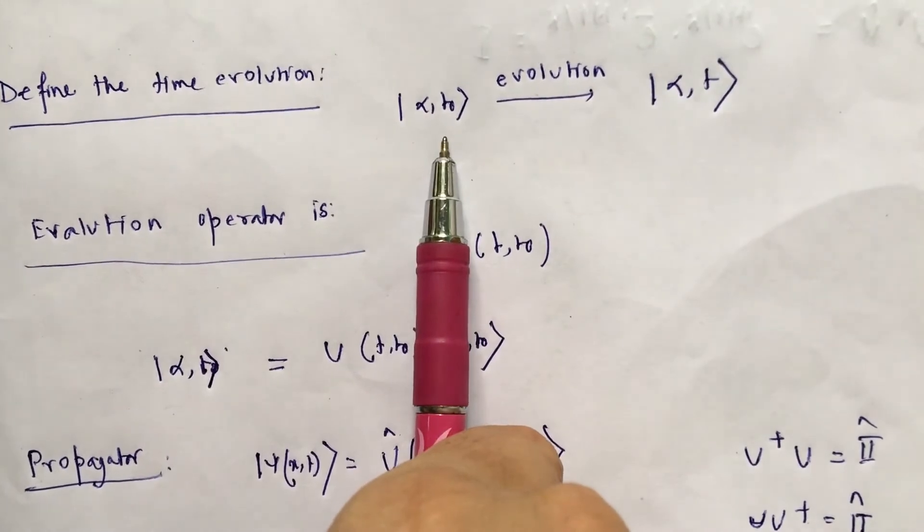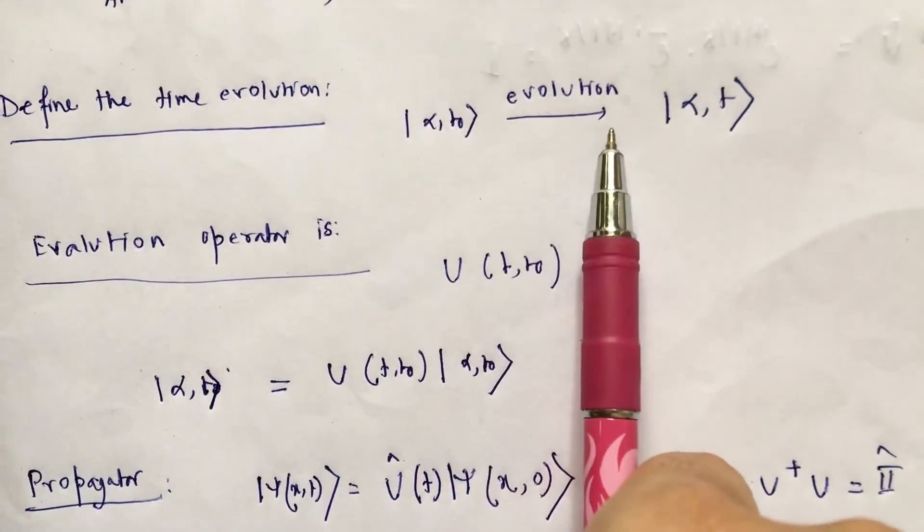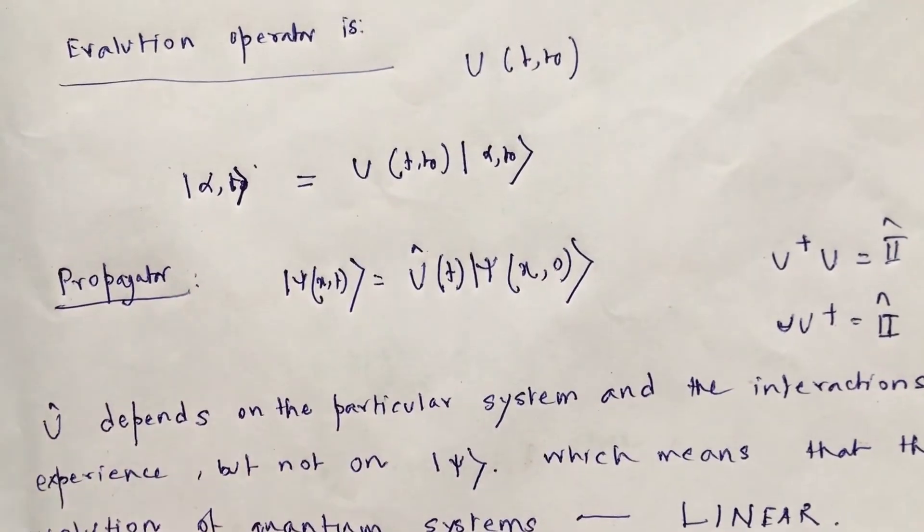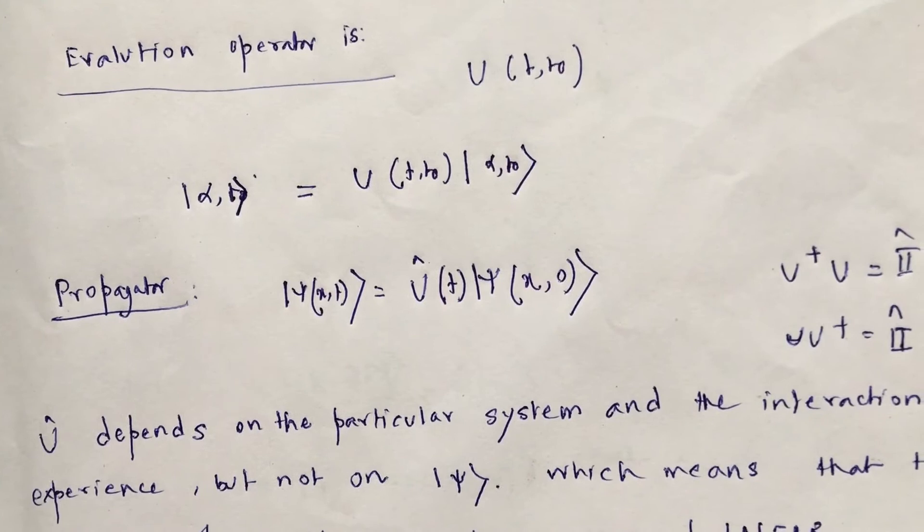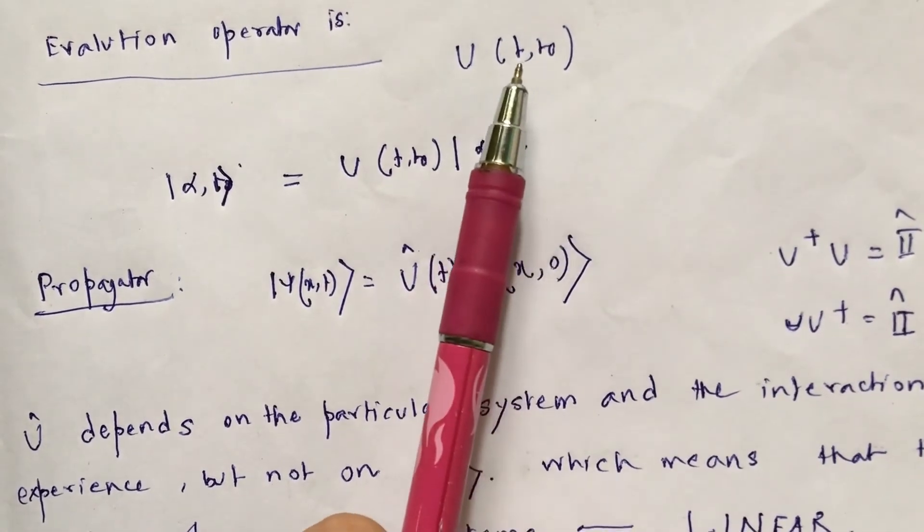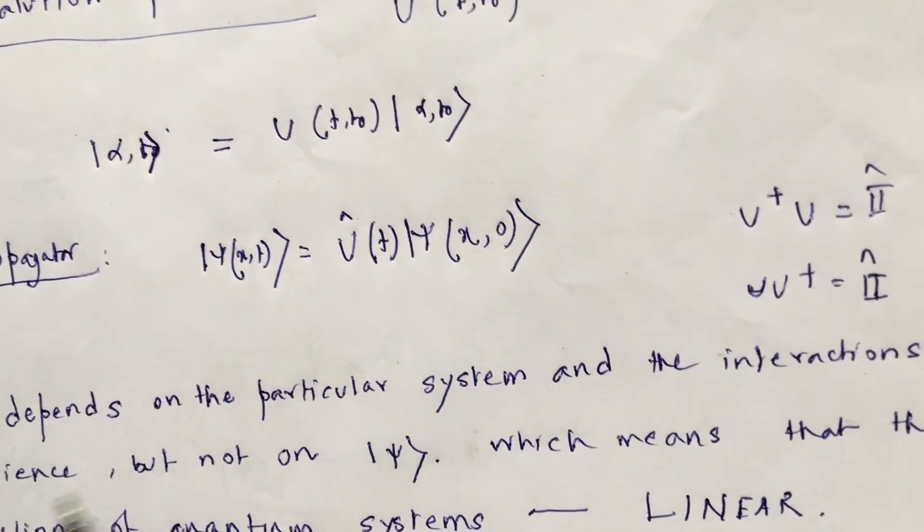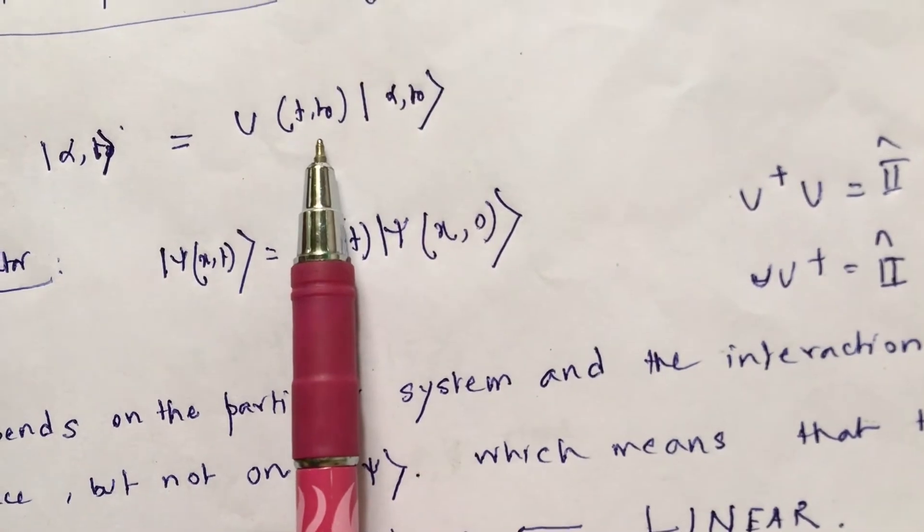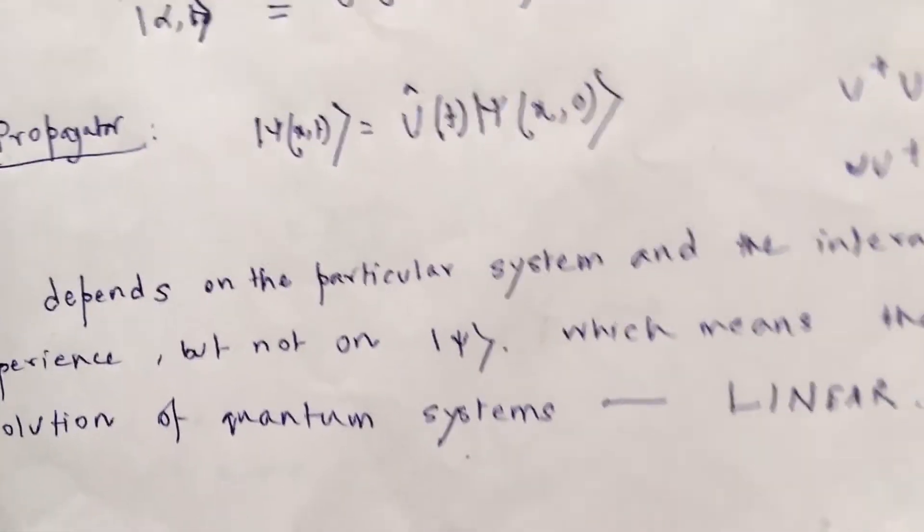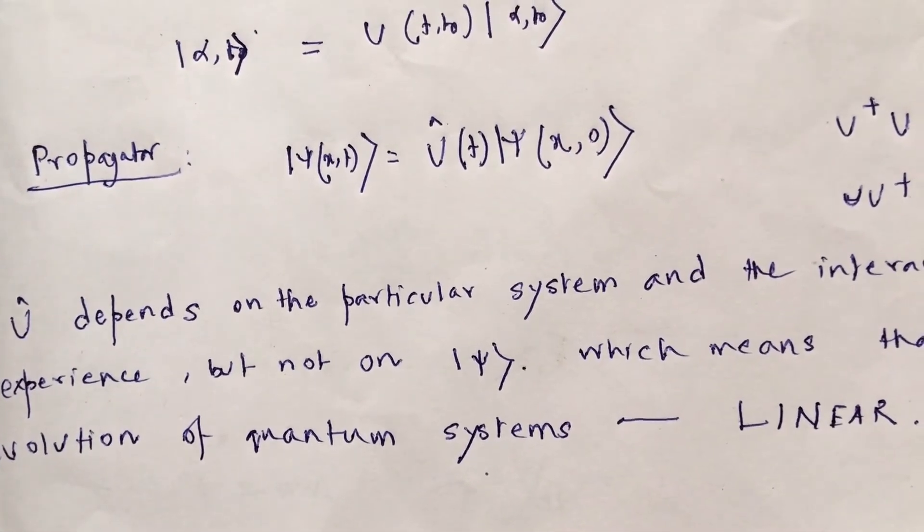So how we define time evolution of a state? This is my state at an initial time t0. So state is alpha t0, and after time evolution, the state is now alpha t, and the evolution operator is determined or defined as u. It is written as u, and which is both function of t and t0, which is basically a function of time. So when we are applying the time evolution operator u on this initial state alpha t0, we will get the final state alpha t. And in terms of chi, because we are using chi throughout as to describe the state of the particle.